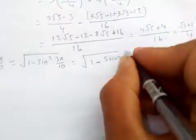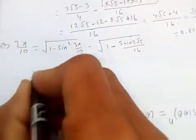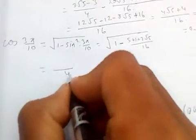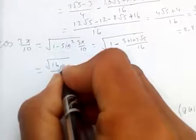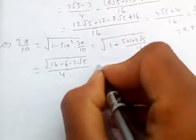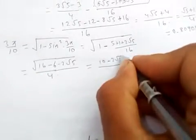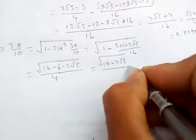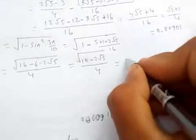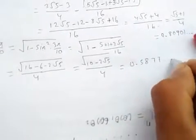Now if you simplify you will get √(16-6-2√5) over 4, which is √(10-2√5)/4, and this value is approximately equal to 0.5877 and so on.